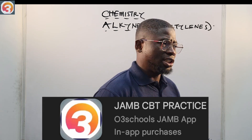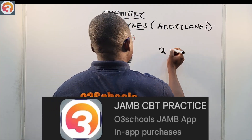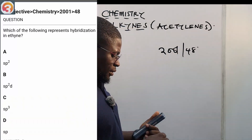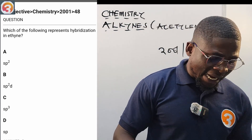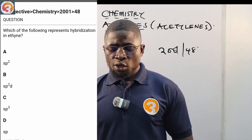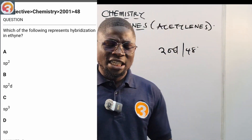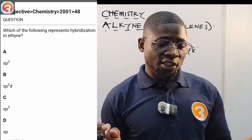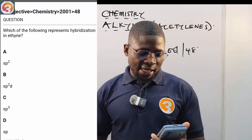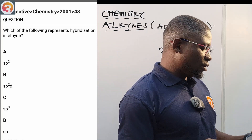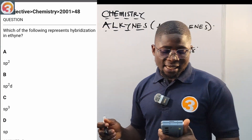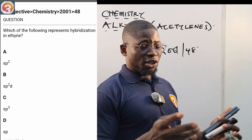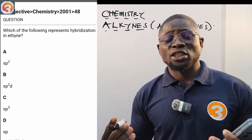Let us see a question from the app. This is JAMB session 2001, number 48. It says: which of the following represents hybridization in ethyne? A says sp2, B says sp2d, C says sp3, D says sp. When we are done with this class we will be able to answer this question easily.